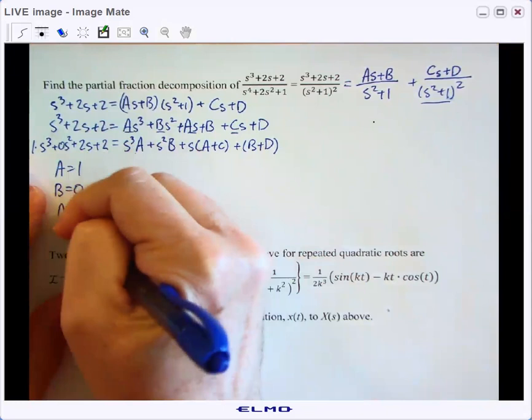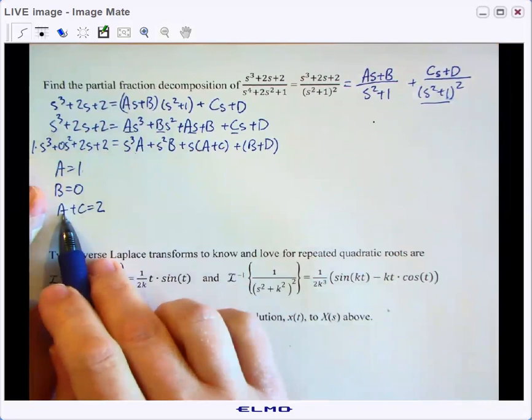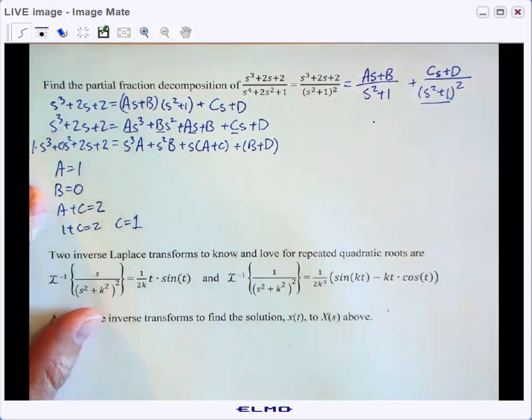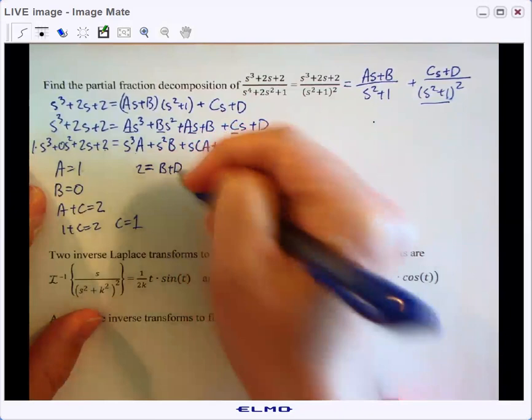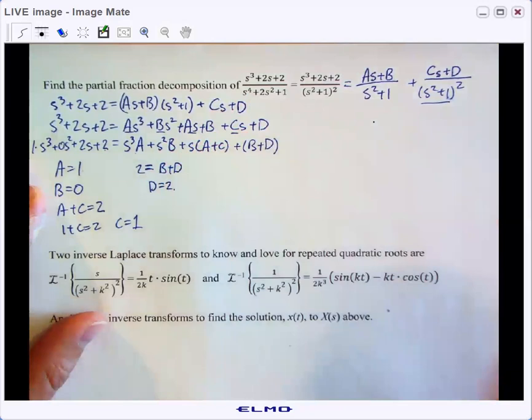The coefficient of the S has to be two. So A plus C has to equal two. I already now know that A is one, so that forces C to have to be one. And two has to be the same as the constant term here. So two equals B plus D. And knowing that B is already zero, that tells me that D had to be two.